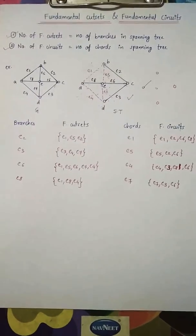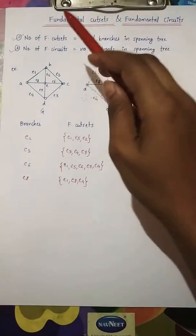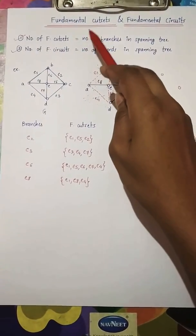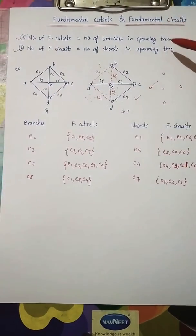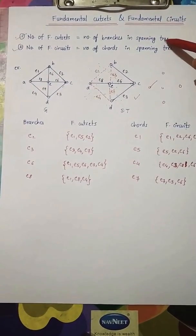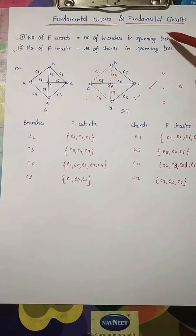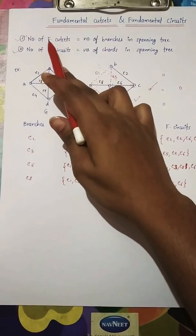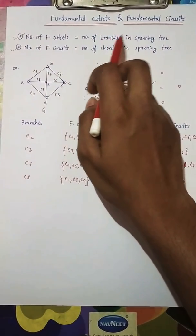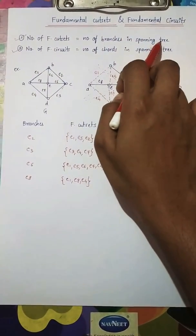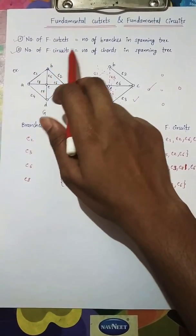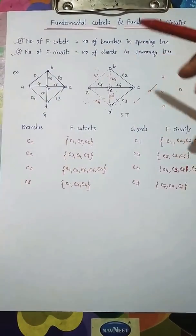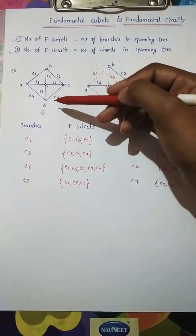Hi everyone. In this video I'm going to tell you about fundamental cut sets and fundamental circuits. Keep these two things in mind: the number of fundamental cut sets is equal to the number of branches in the spanning tree, and the number of fundamental circuits is equal to the number of chords in the spanning tree.